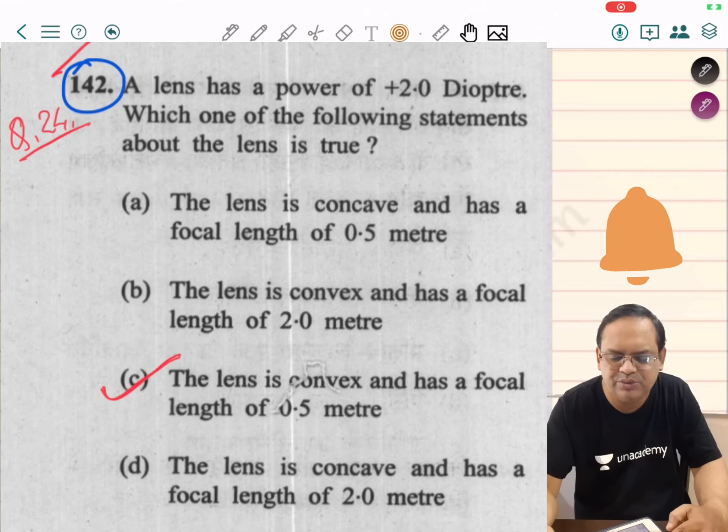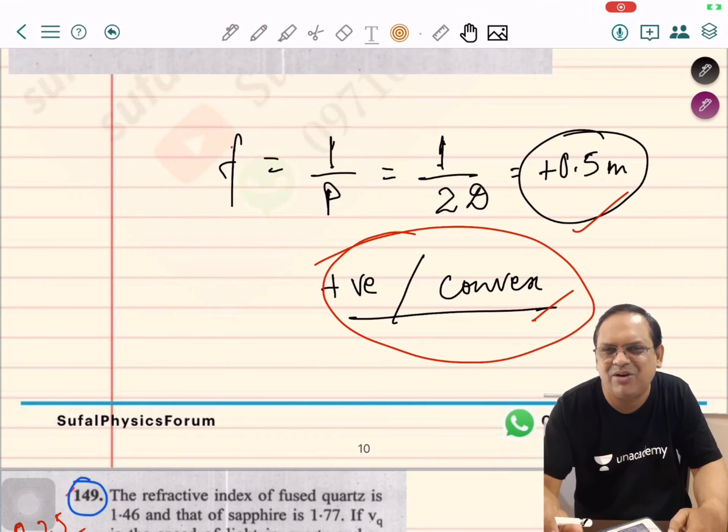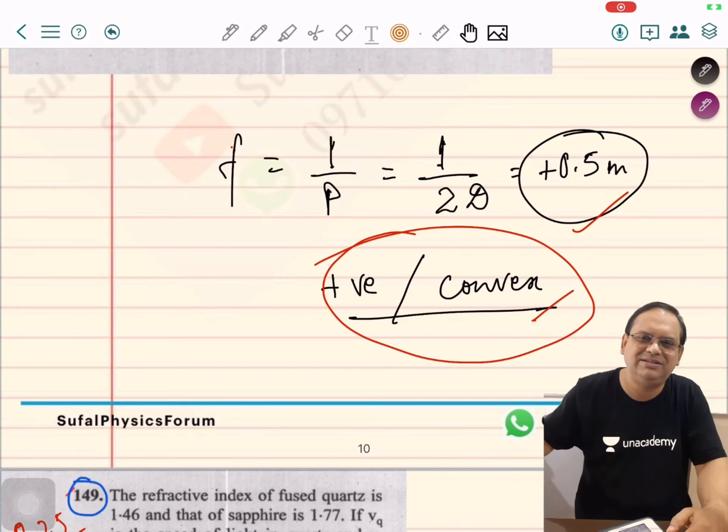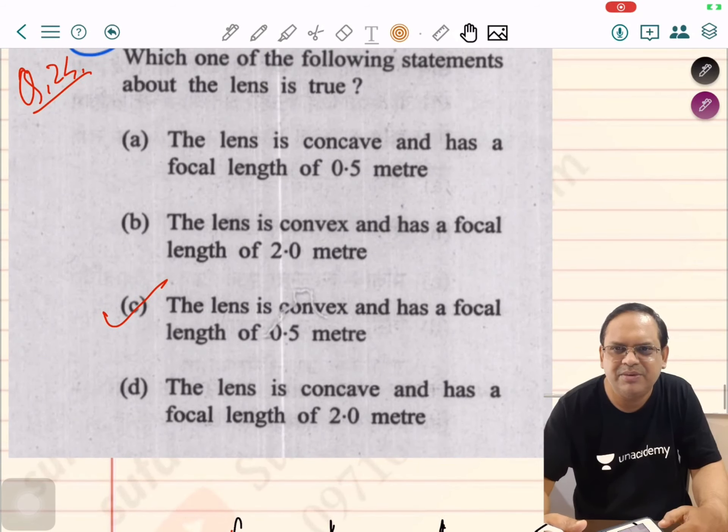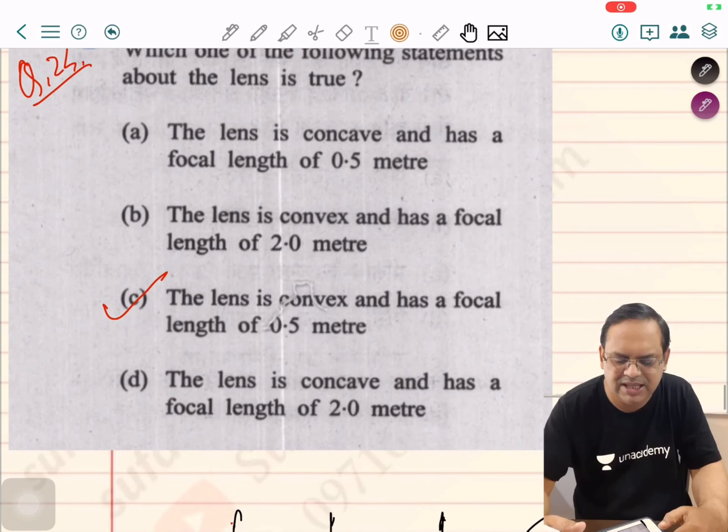Question number 24. A lens has a power of two diopters. Which one of the following statements about the lens is true? Focal length and power of the lens have a reciprocal relationship, and power is given as two diopters, so focal length will be 0.5 meter, because one by two is 0.5 meter. Obviously positive sign will be there, and positive focal length means that our lens is convex. Option C is obviously correct: the lens is convex and has a focal length of 0.5 meter.